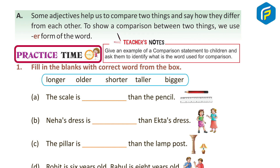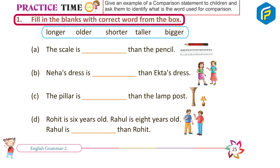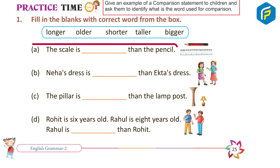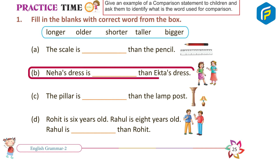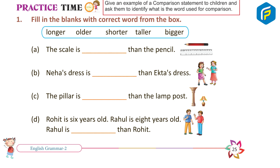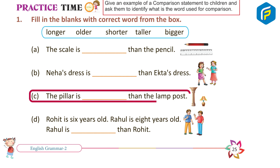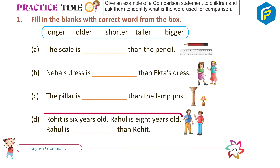Practice Time 1. Fill in the blanks with the correct word from the box. A. The scale is longer than the pencil. B. Neha's dress is shorter than Ekta's dress. C. The pillar is taller than the lamp post.